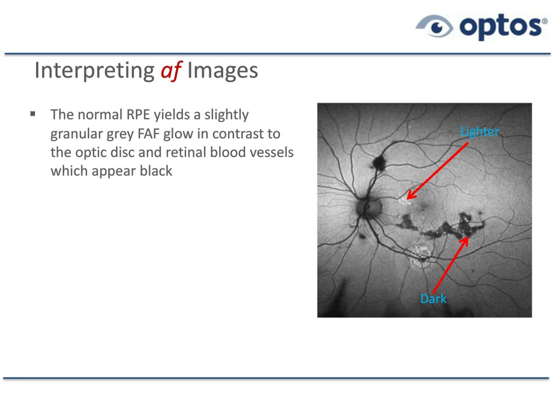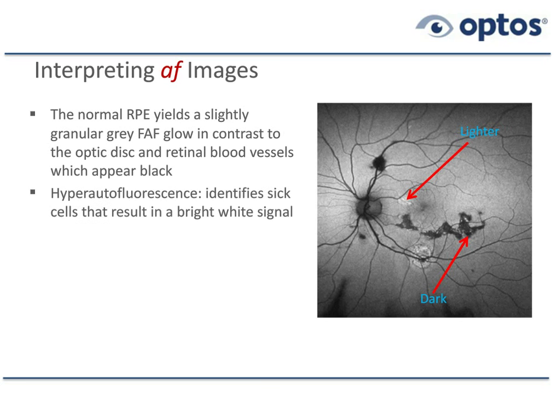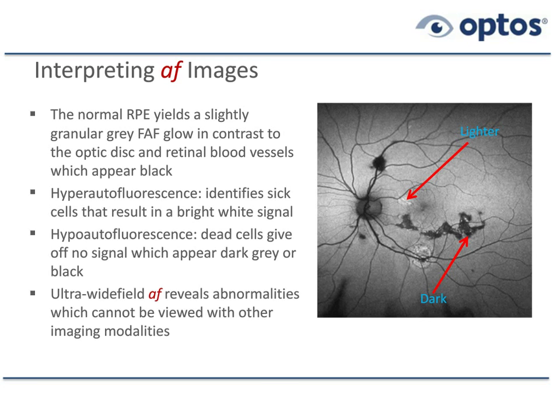Certain areas can be lighter — that would be an area of hyperautofluorescence. Below that, with a second red arrow, we can see zones which are dark — hypoautofluorescence. Hyperautofluorescence identifies sick cells that result in a bright white image; these cells are metabolically active or overactive. Hypoautofluorescence tells us about dead cells, which give off no signal and usually appear as dark gray or black. There are a couple of exceptions to these general rules.